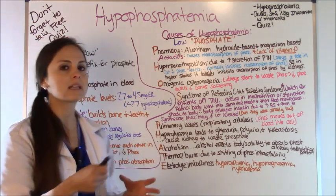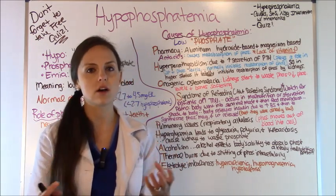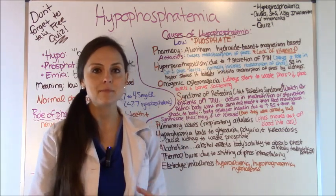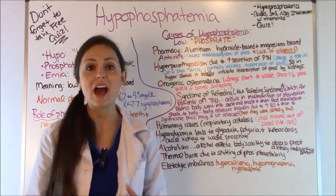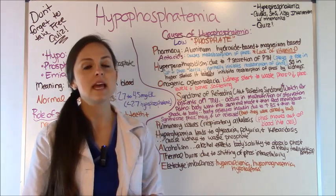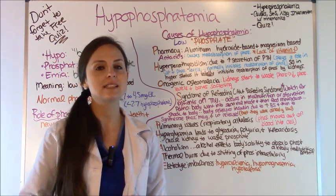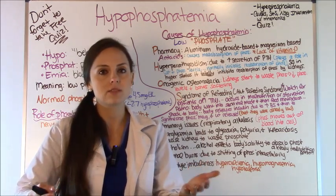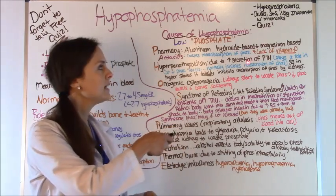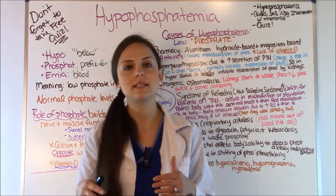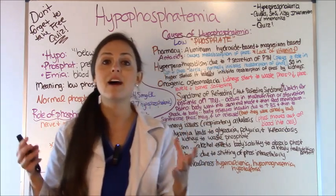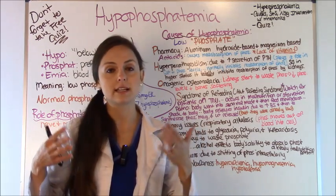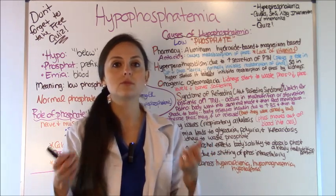P stands for pharmacy drugs. Specifically, aluminum hydroxide-based and magnesium-based antacids — these mess up how your GI system absorbs phosphate, causing malabsorption so you won't take in phosphate through food. Another P cause is the lack of vitamin D. Remember, vitamin D helps you absorb phosphate, so if you have low levels or aren't taking enough supplements, this affects your ability to absorb phosphate.